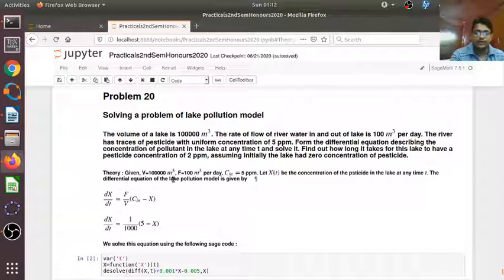And the river has traces of pesticide with uniform concentration of 5 parts per million.